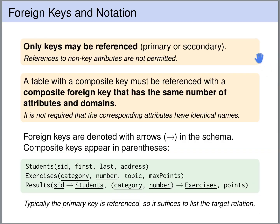Foreign key references only allow us to reference keys — primary or secondary — not non-key attributes. If we want to reference a row in a table with a composite key, then the foreign key has to consist of the same number of attributes over the same domains, though the attribute names do not need to match. In our relational schemas, we denote foreign keys with an arrow, and composite keys are written in brackets. For example, in the results table we have a composite foreign key consisting of category and number that references the exercises table, and a foreign key SID that references the students table.